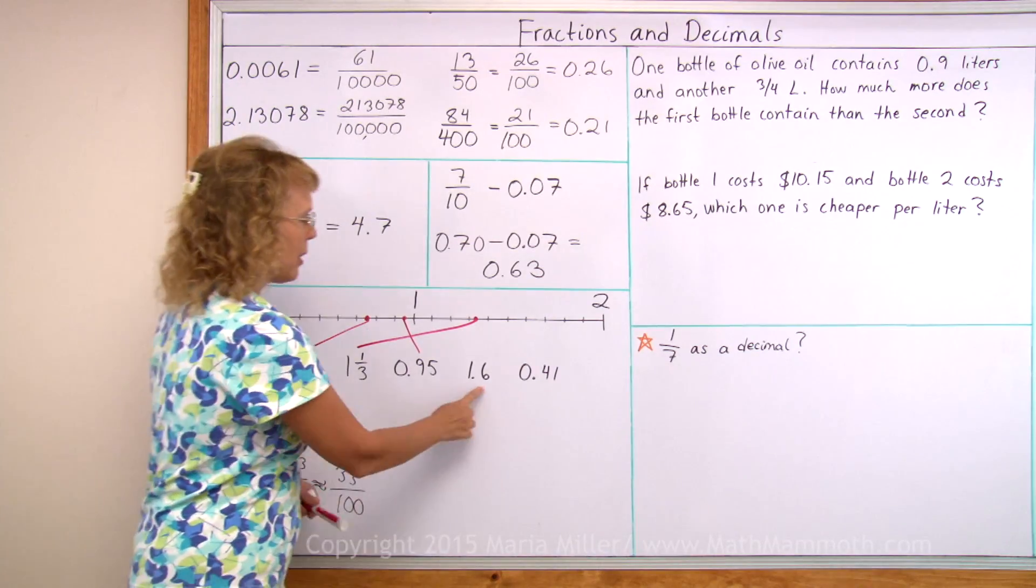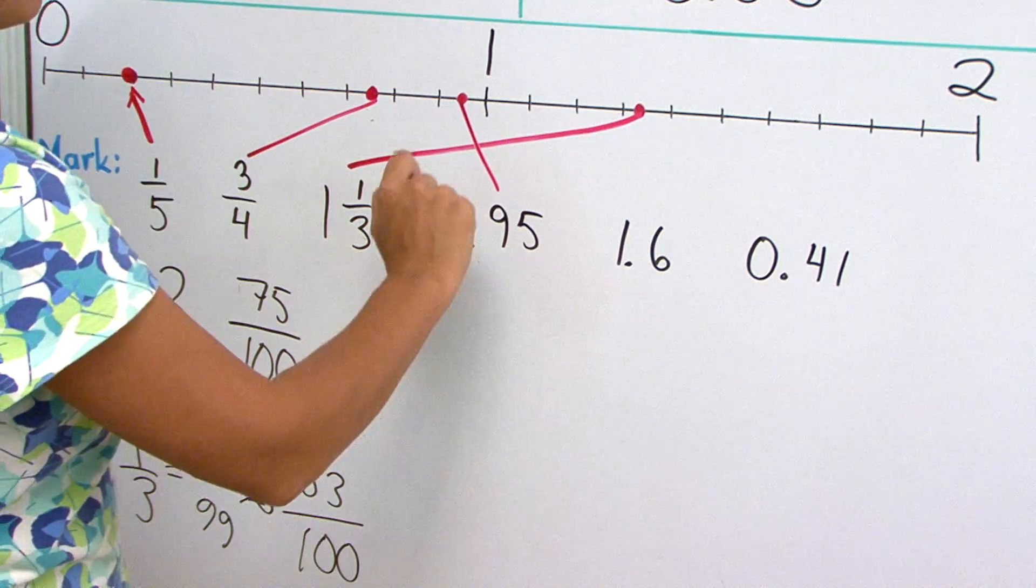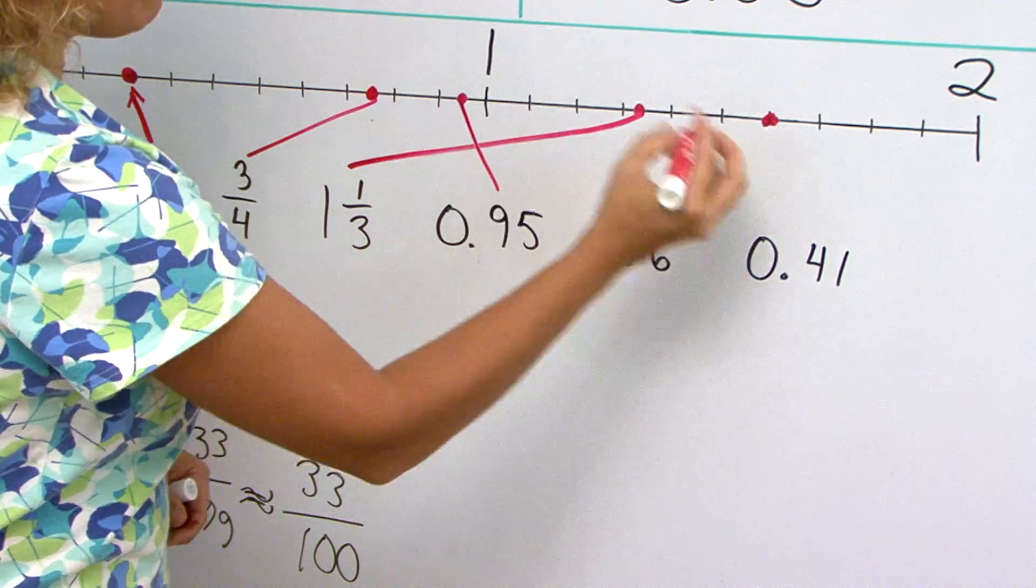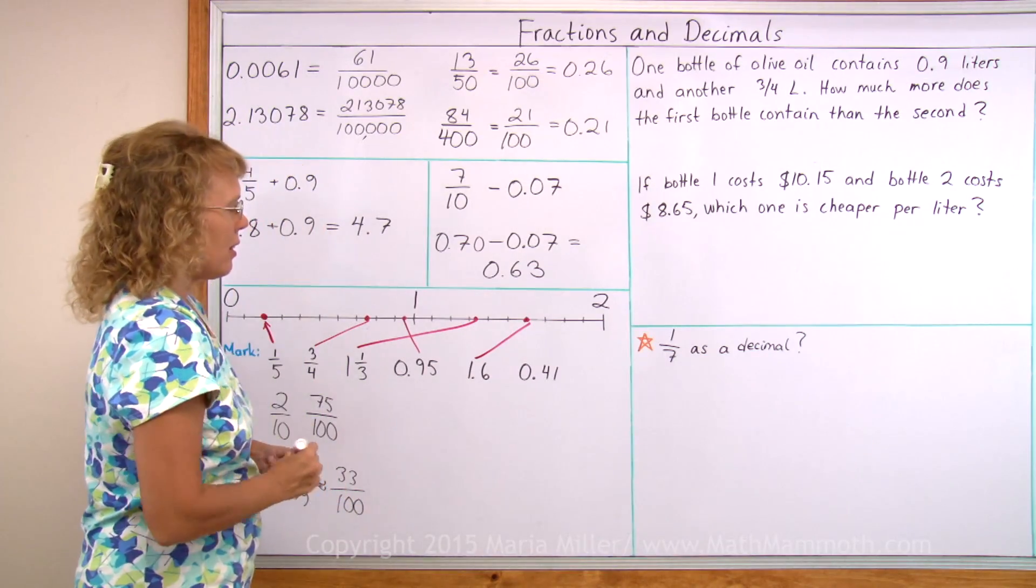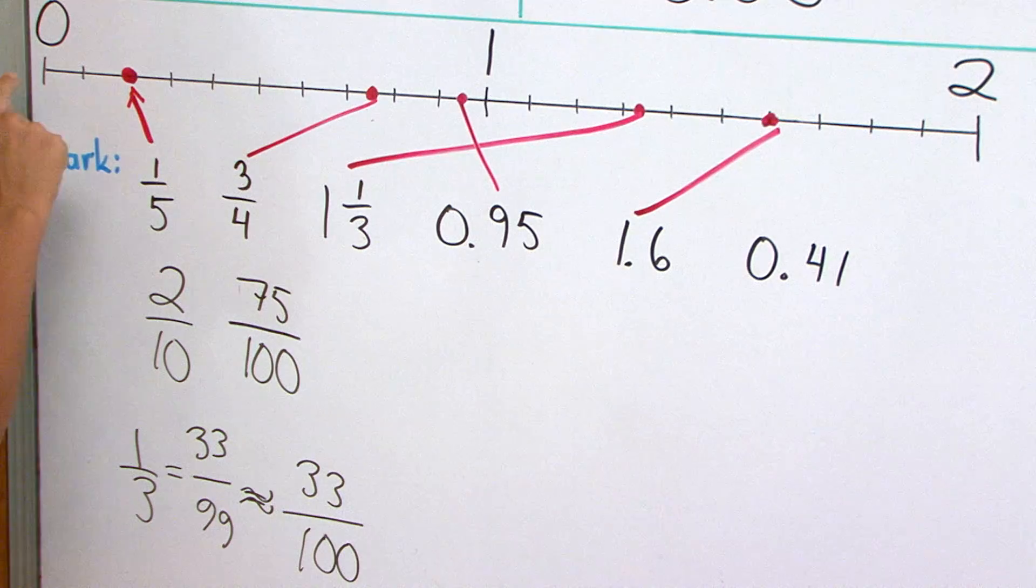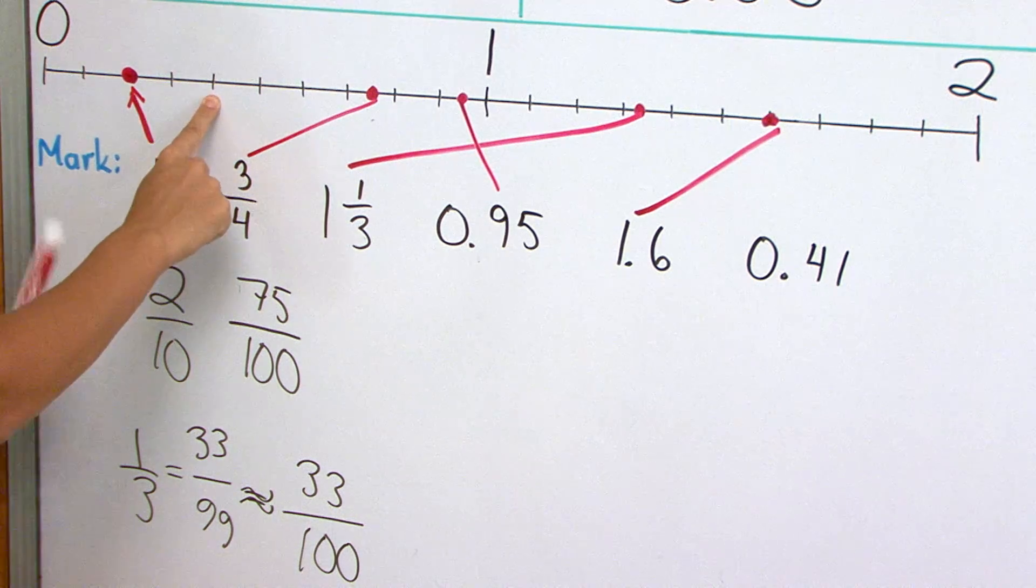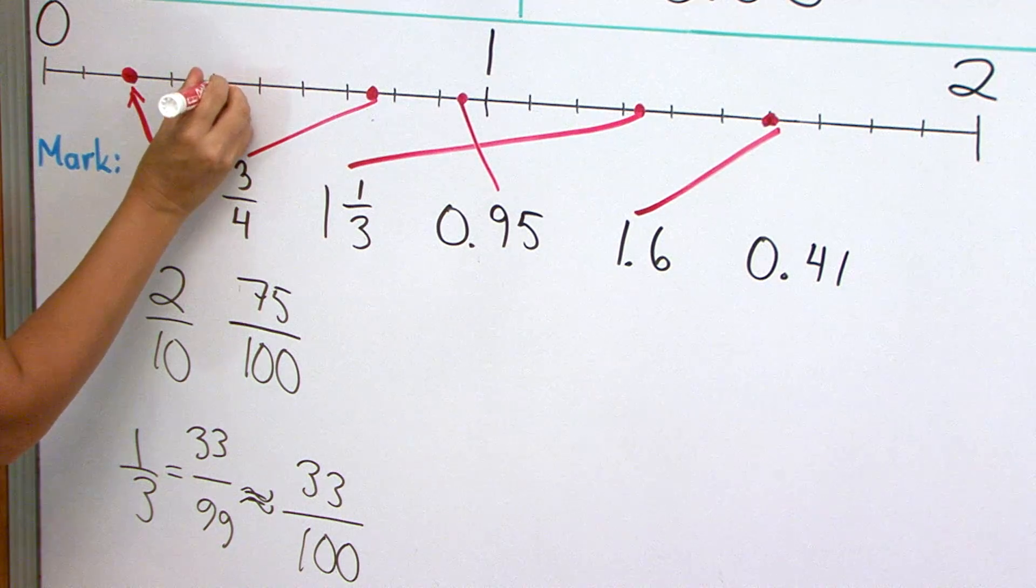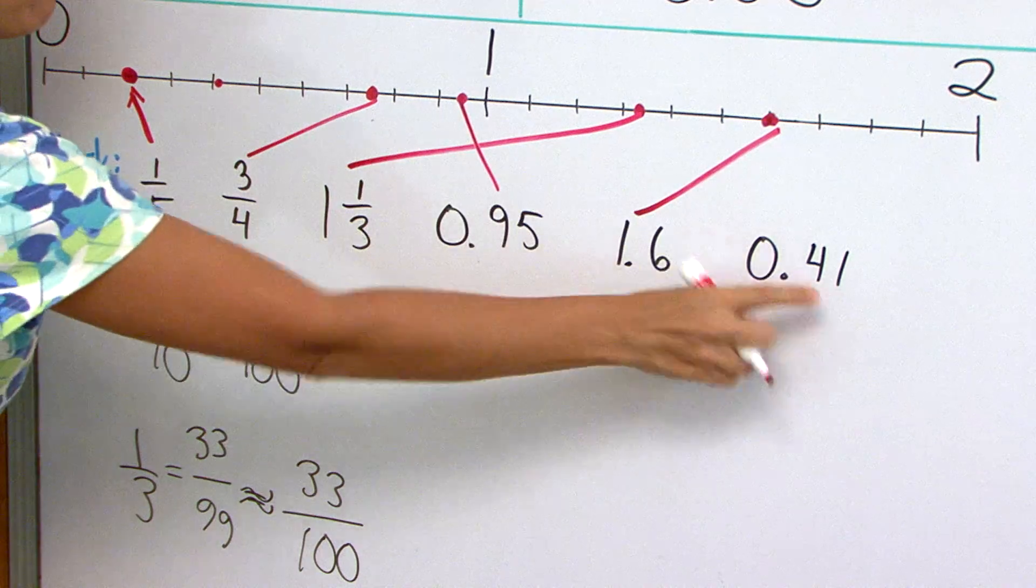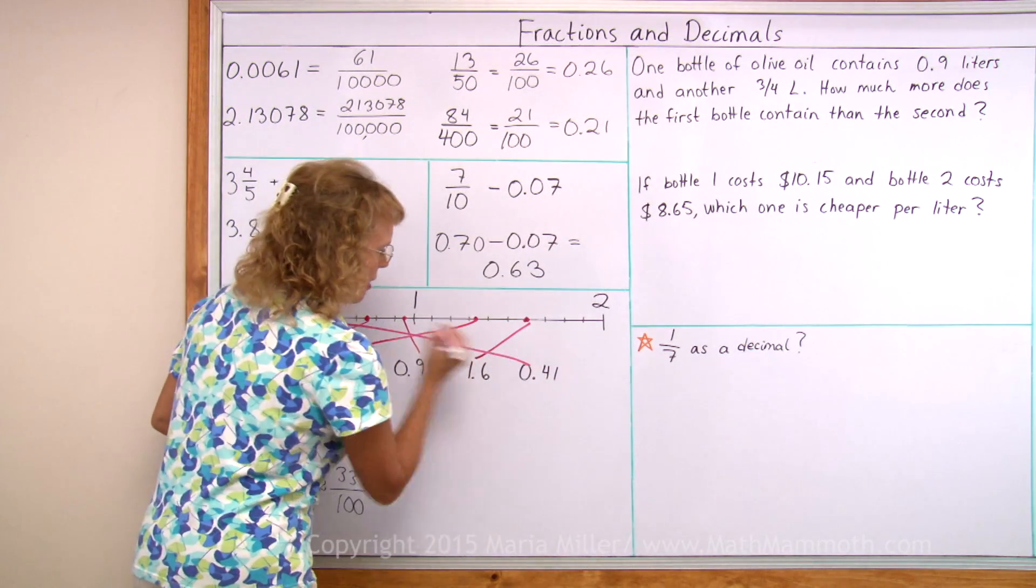One point six. Well that's easy. One and six-tenths, this is divided into tenths. So I just count one, two, three, four, five, six. Here is the sixth tenth after one. And then zero point four one is a little bit past zero point four. Here's four-tenths. Just a little bit past that, because if you imagine this divided into ten new parts, then it would be the first mark after that. There.